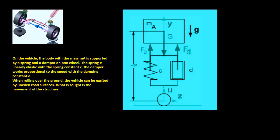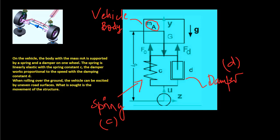On the vehicle, the body with the mass MA is supported by a spring and a damper on one wheel. The spring is linearly elastic with the spring constant C. The damper works proportional to the speed with the damping constant D.